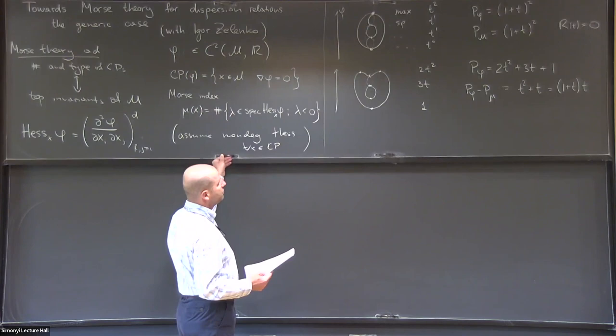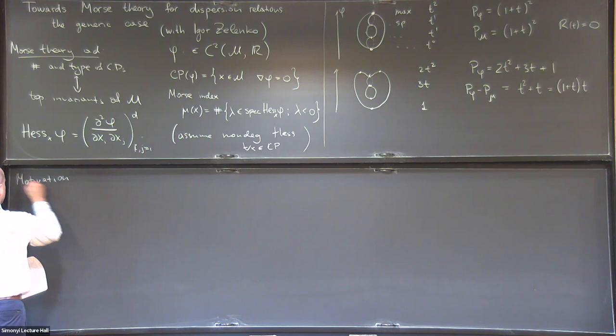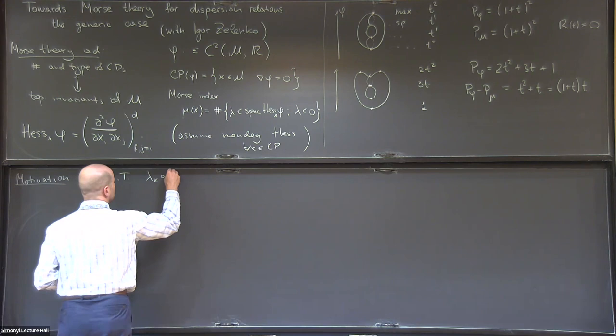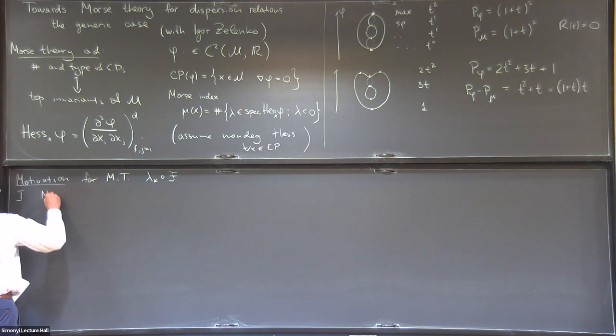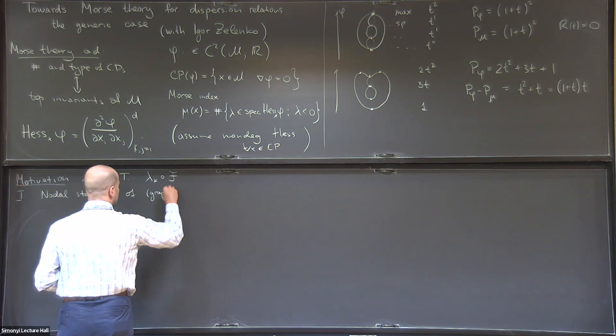So this is a really cool result. What's my motivation for it? Why do I want similar results for eigenvalues? My motivation for wanting Morse theory for eigenvalues of operator families: the original motivation was from nodal statistics of graph eigenfunctions, although the theory applies to other eigenfunctions as well.